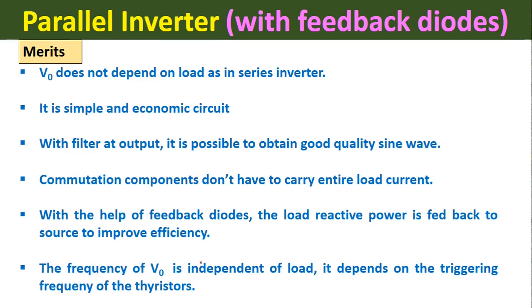Now the merits of the parallel inverter with feedback diodes: First, output voltage does not depend on load, unlike the series inverter where output voltage depends on load parameters. Second, it is a simple and economical circuit. Third, the output is a square or rectangular waveform, so with a filter at the output it is possible to get a good quality sine wave. Fourth, commutation components don't have to carry the entire load current. Fifth, feedback diodes return load reactive power to the source, improving efficiency. Sixth, the frequency of the output voltage is independent of load but depends on the triggering frequency of the thyristor.